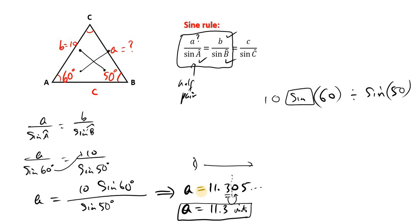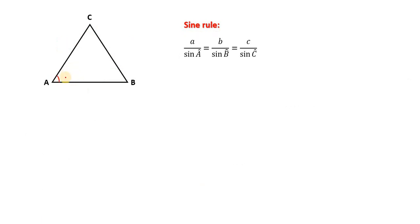Now let's look at how we find angles using the sine rule. Let's say we do not know angle A, but we know the side it faces — let's say this is 11 centimeters. At the end of this line, we have one known and the other unknown — so side A is known but angle A is unknown. To use either B or C, we must have a full pair: side B and angle B must both be known, or side C and angle C must both be known.